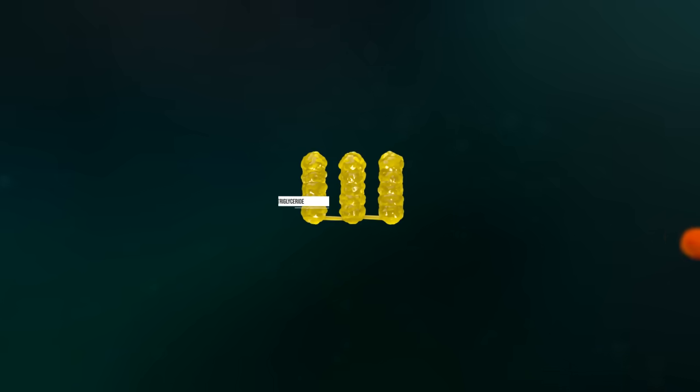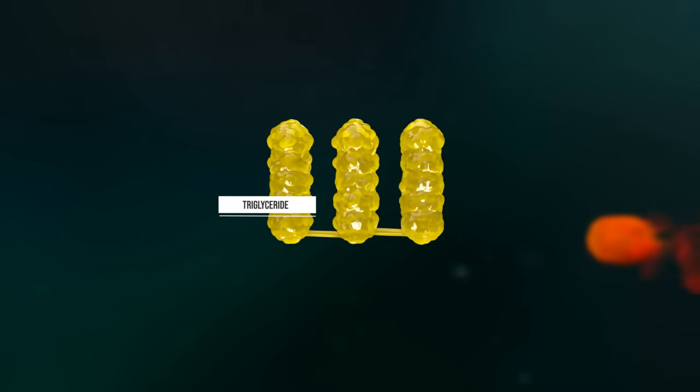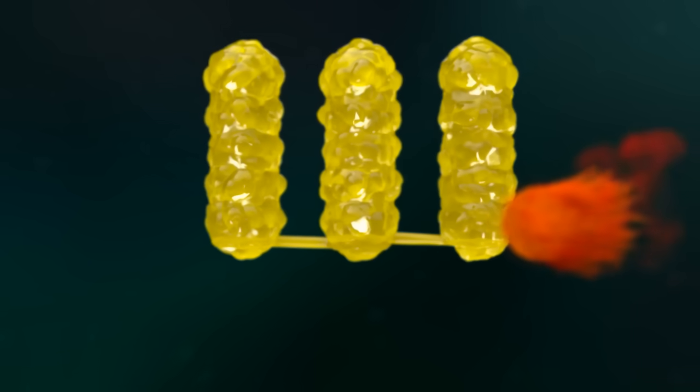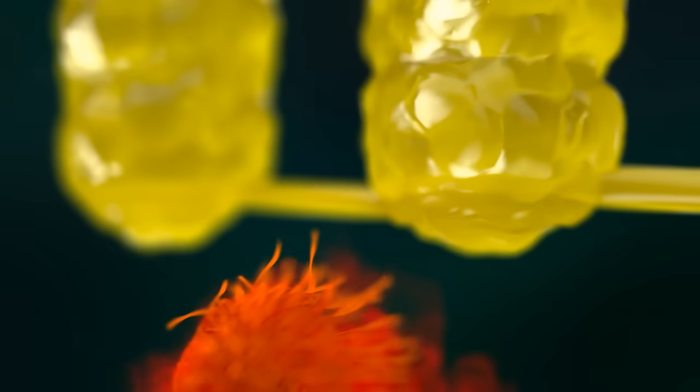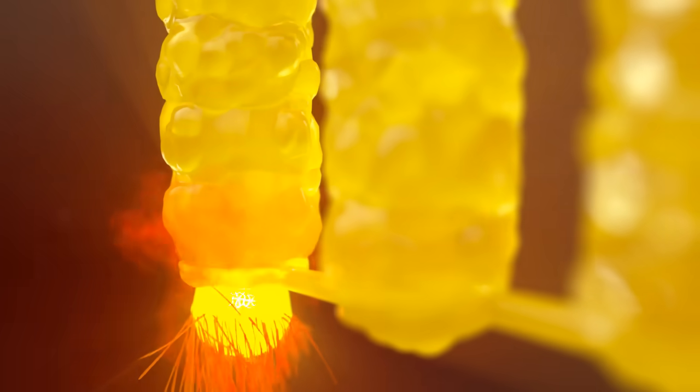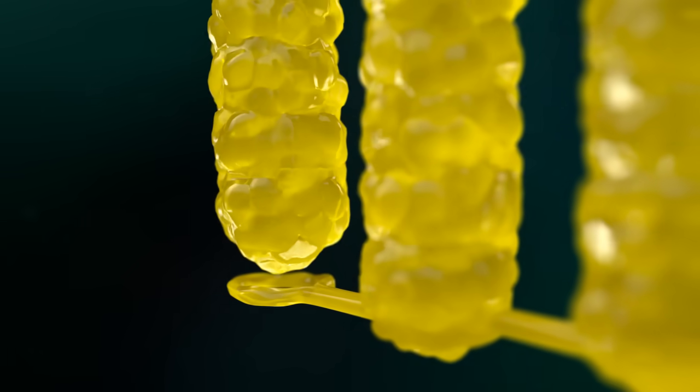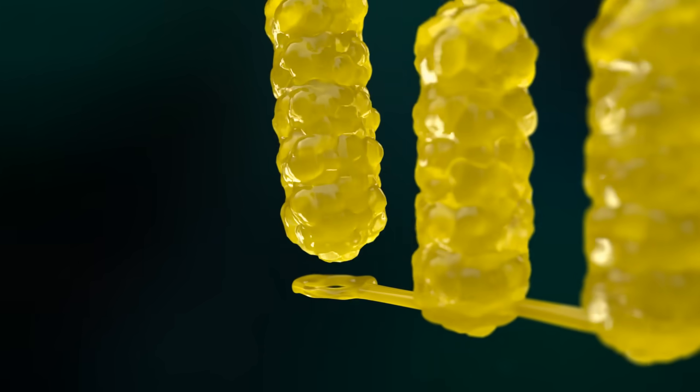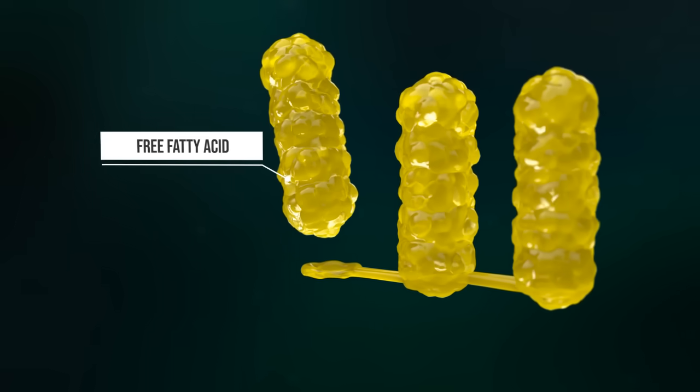The stomach also contains gastric lipase, an acid-resistant enzyme for fat digestion. Gastric lipase splits a triglyceride into a free fatty acid and a diglyceride, whereby only the free fatty acid can be absorbed by the body. More effective fat digestion takes place in the small intestine.